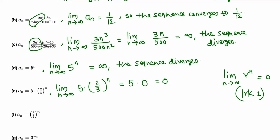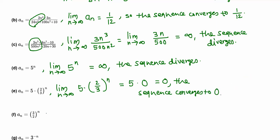So the sequence converges to 0. Next, part f: the limit of (3/2)^n when n goes to infinity. Since 3/2 is greater than 1, when n goes to infinity this grows bigger and bigger, becoming infinity, so the sequence diverges.